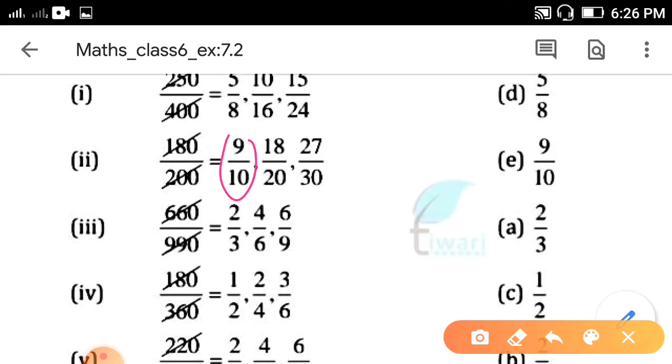So, here 9 upon 10. Now, 2 more equivalent fractions, multiply with 2 and 3. 9 to 18, 10 to 20, 9 to 27, 10 to 30.